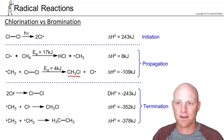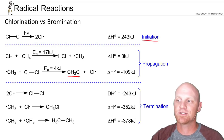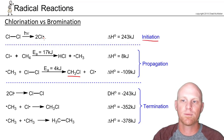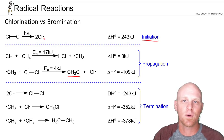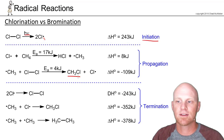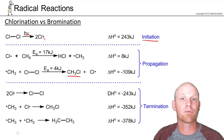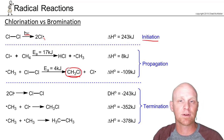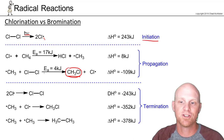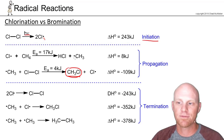The first step is the initiation step, where we actually form some radicals to get going. That generally requires either light, heat, or peroxide. Then you've got a sequence of two propagation steps that repeat over and over again where your product is formed — as seen here in this example of free radical chlorination of methane. Generally, you form a carbon radical in the first propagation step, and then form your product with that carbon radical in the second propagation step.